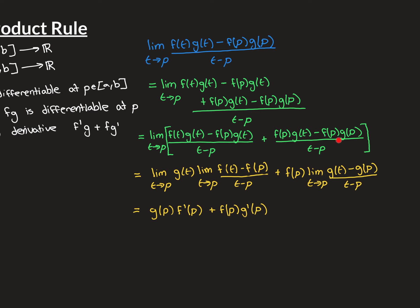Now let me convince you this is equivalent to our target using the algebra of limits. Because we know both limits exist, we can combine them by multiplying: we get g(t) times f(t) minus g(t) times f(p), all over t minus p. Then, since f(p) is a constant multiple of an existing limit, by the algebra of limits we can bring it inside, getting f(p)g(t) minus f(p)g(p) over t minus p. We then combine those two limits together — since both exist — using the algebra of limits.